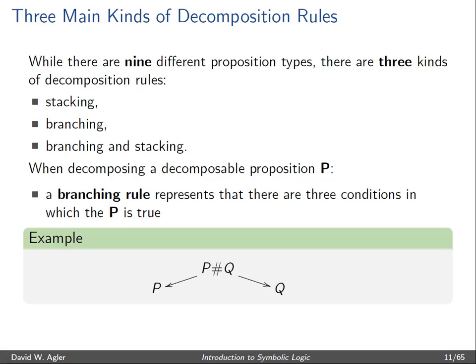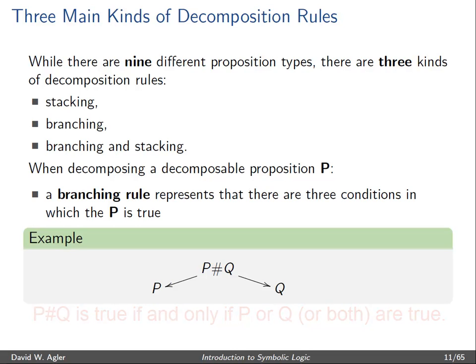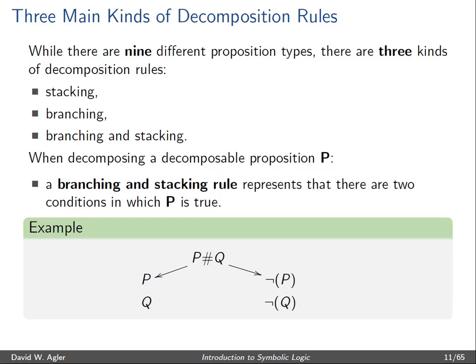A branching rule represents that there are three conditions in which the proposition P is true. So if we had a formula P hash Q, the branching graphical display illustrates that P hash Q is true if and only if either P is true or Q is true.